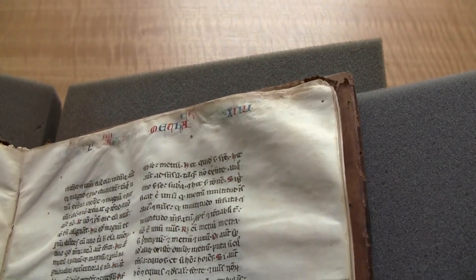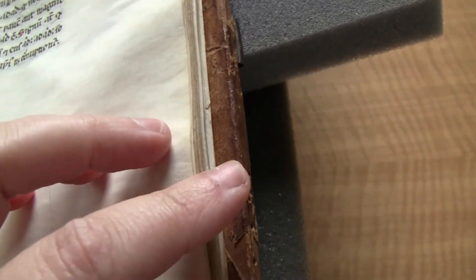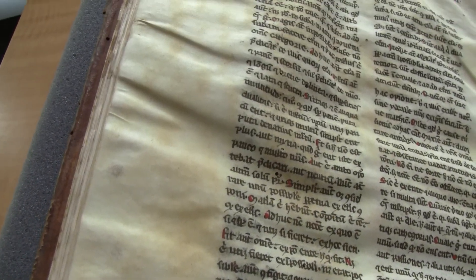This is the flesh side of the page. It's very creamy colored. We're going to turn the page and you're going to see that the hair side is a bit darker. It's quite yellow, yellow here.